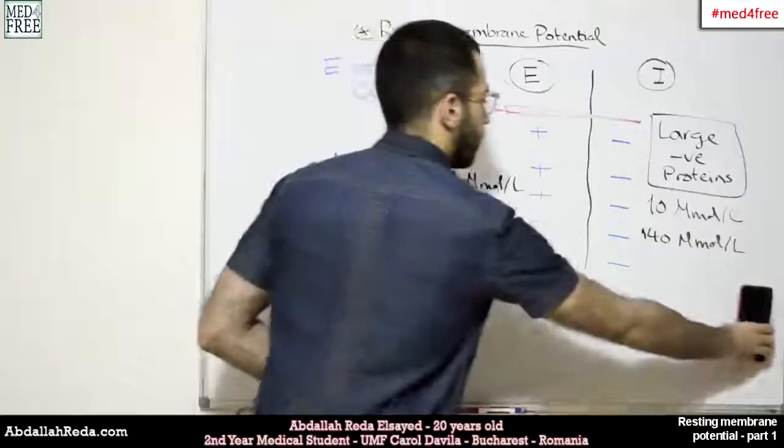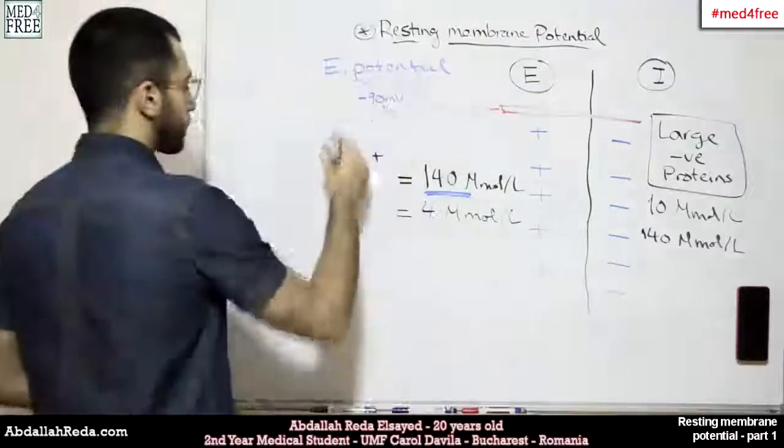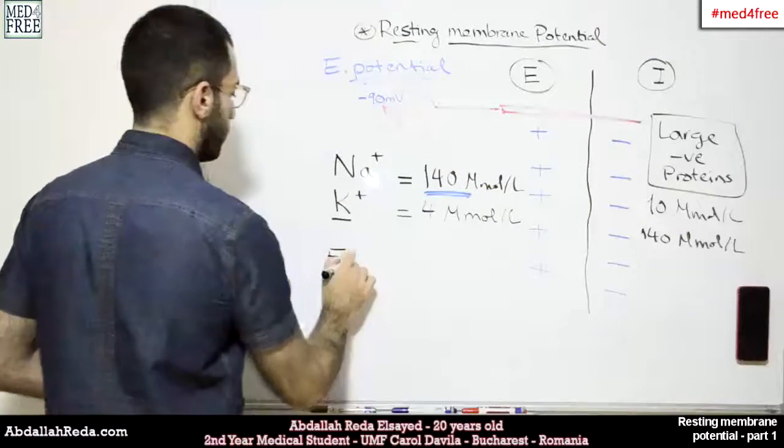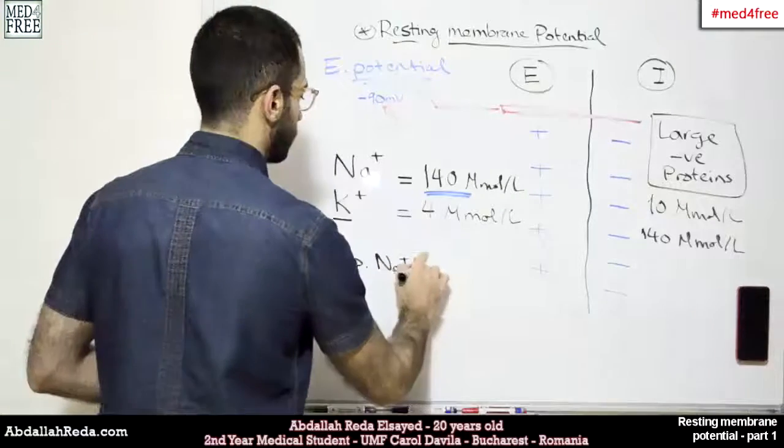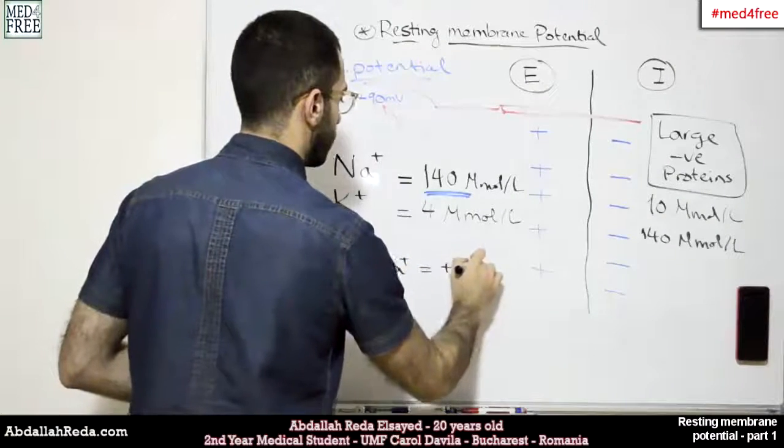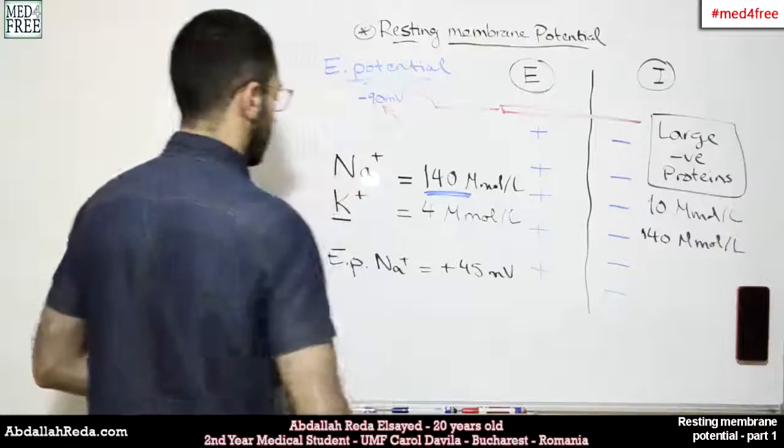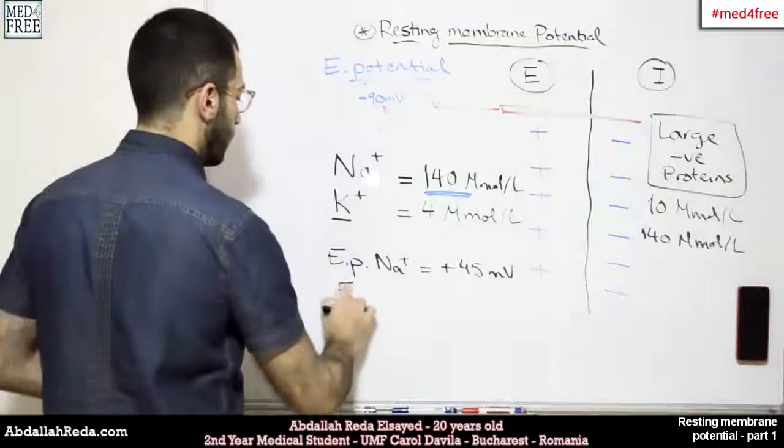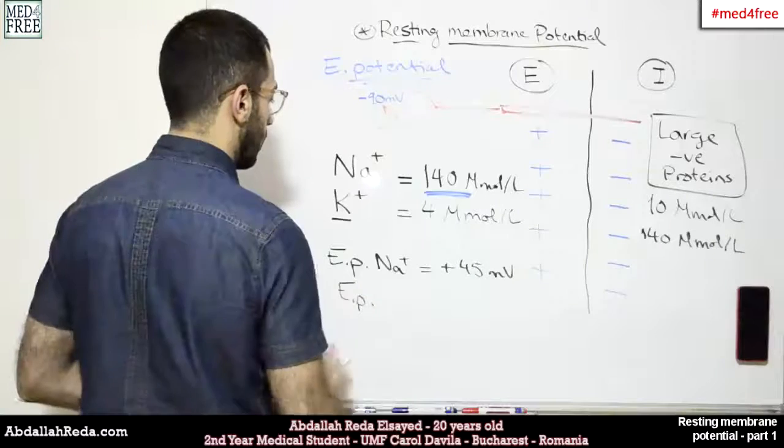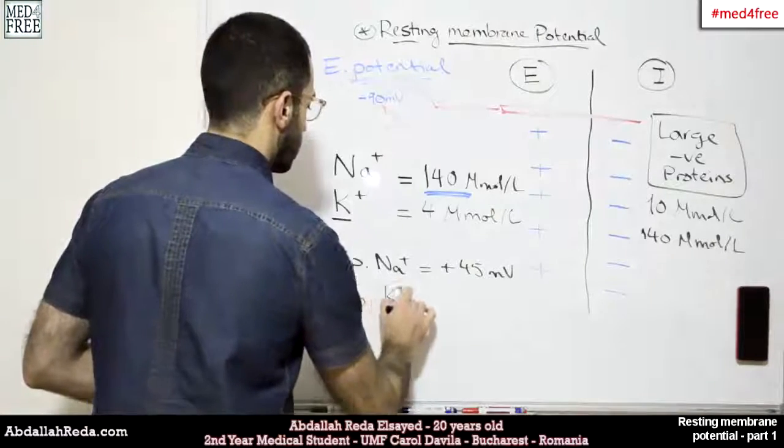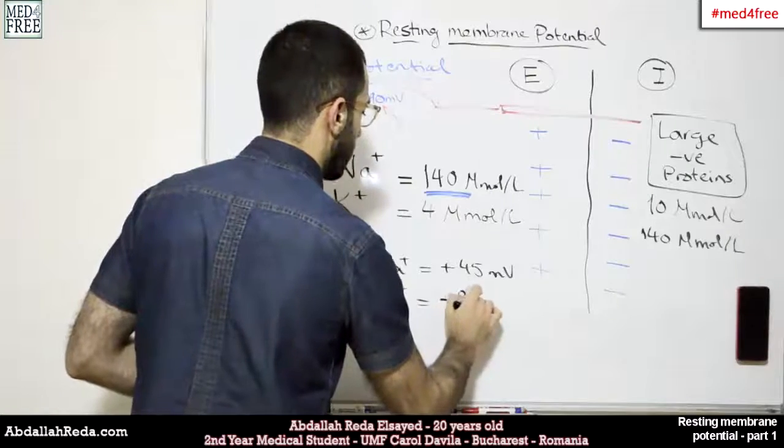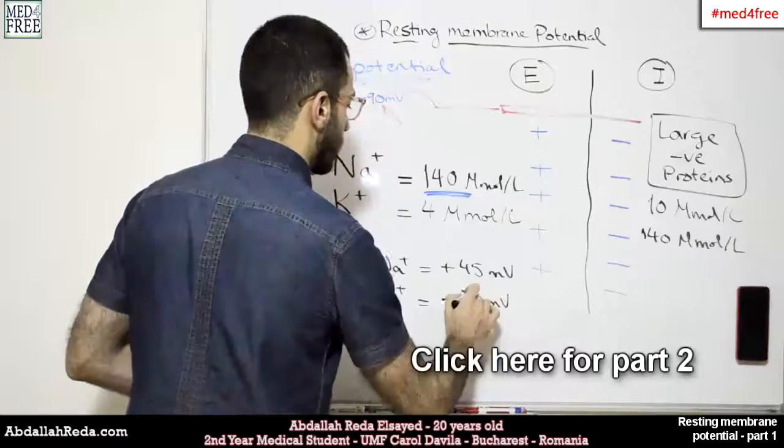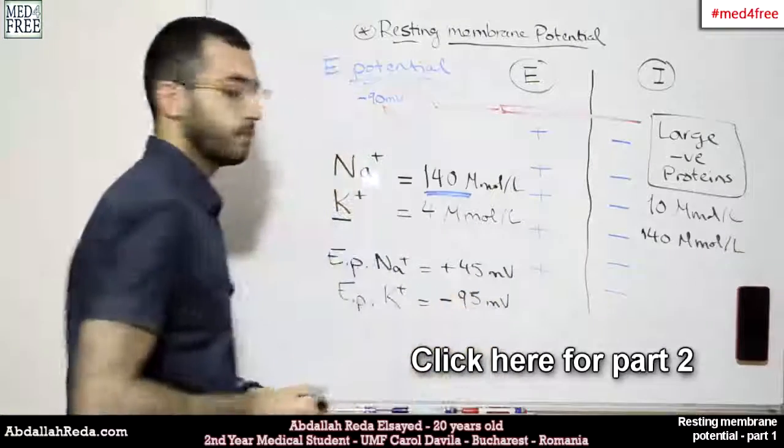The equilibrium potential of sodium would equal positive 45 millivolts, while the equilibrium potential of potassium would equal minus 95 millivolts, around this value, minus 95, 96.